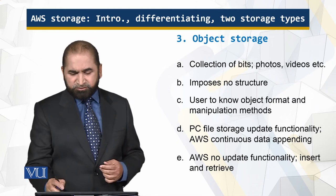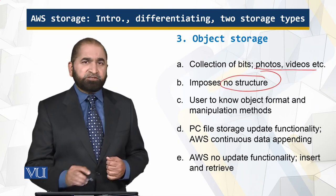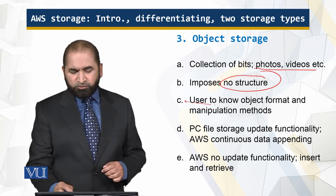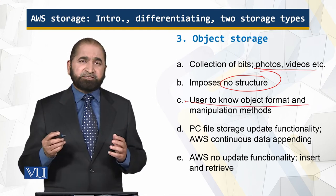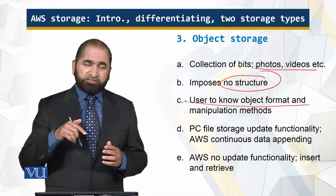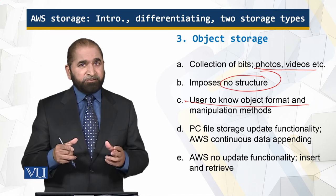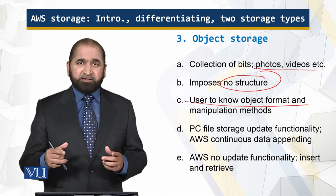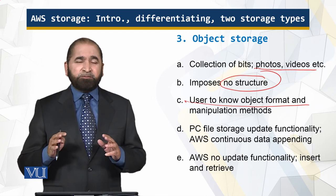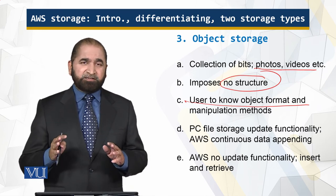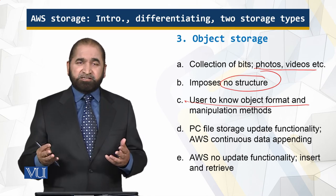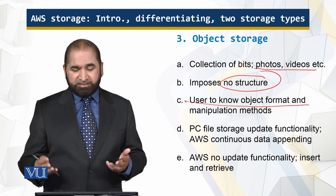AWS object storage is a collection of photos, videos, and more — it imposes no structure, you just store bytes. The user needs to know the object format and the manipulation methods: what tool or application will be associated with what has been stored is the responsibility of the user. For AWS storage, these are just bytes — images, audio, animation, or MRI scans.